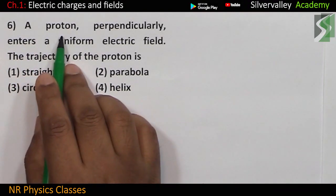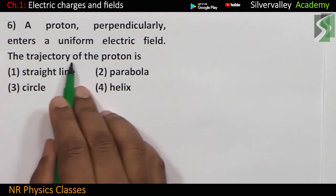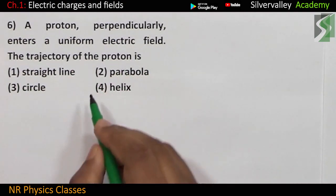A proton perpendicularly enters a uniform electric field. The trajectory of the proton is parabola.